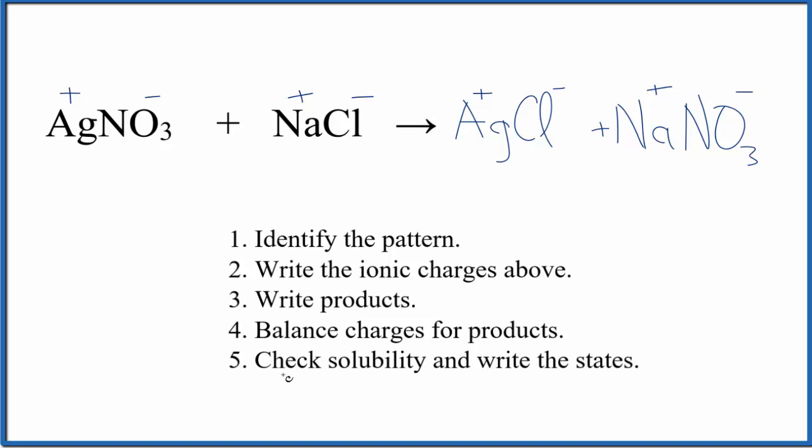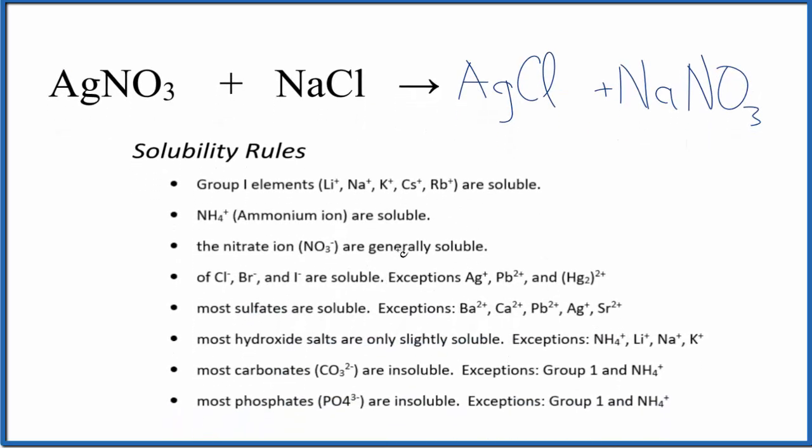Now that we have the products, we need to check for solubility and write the states. If you know your solubility rules, compounds with the nitrate ion, they're going to be soluble. So let's put an AQ after that. Compounds with group 1 elements like sodium, they're also very soluble. That's going to be aqueous as well. And since we have sodium nitrate over here, let's put an AQ after that.